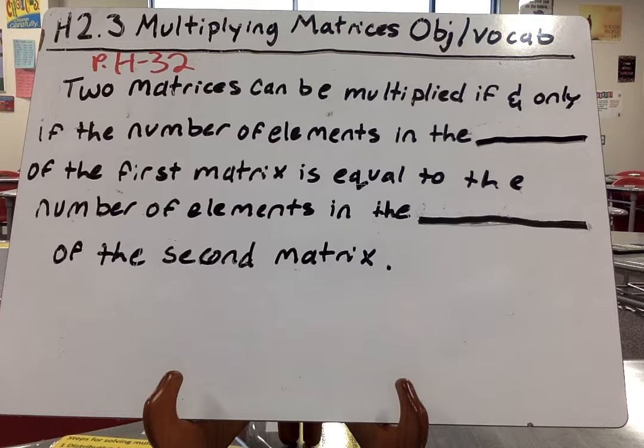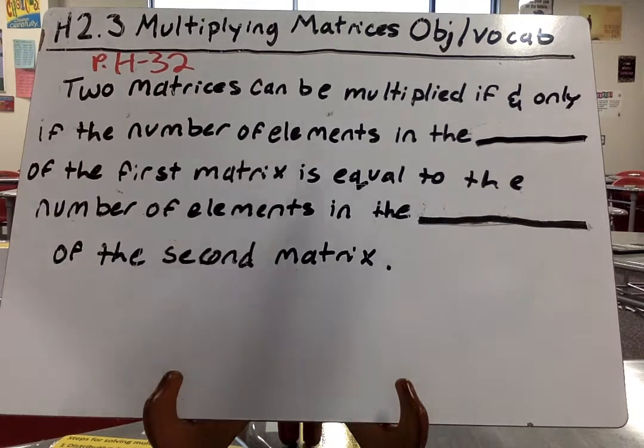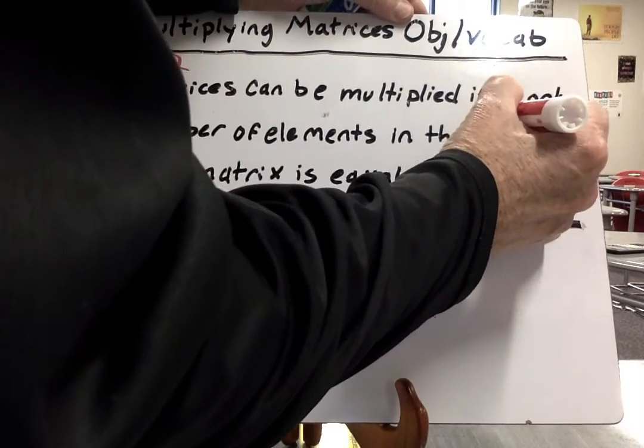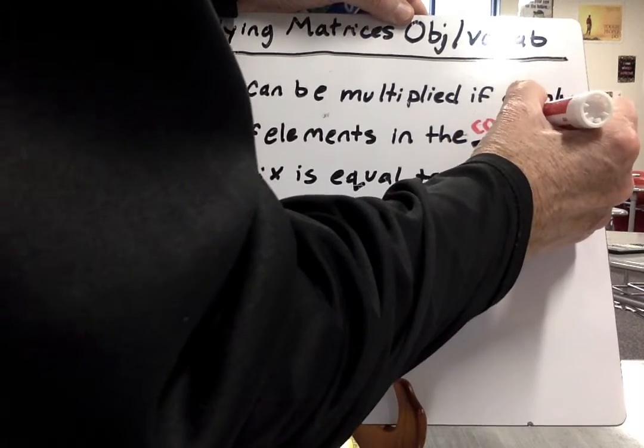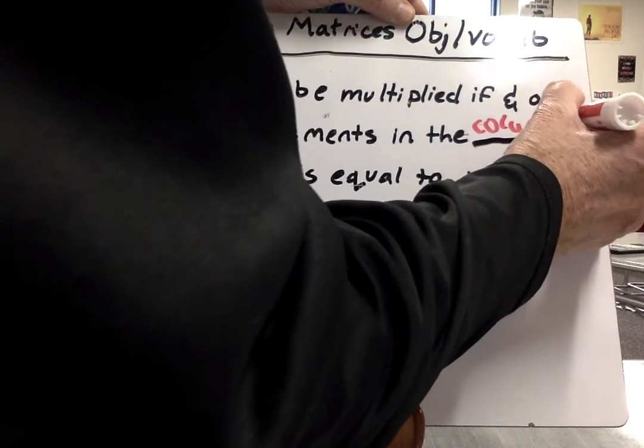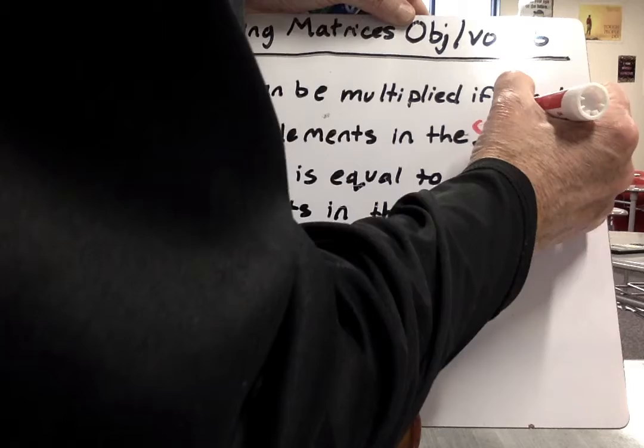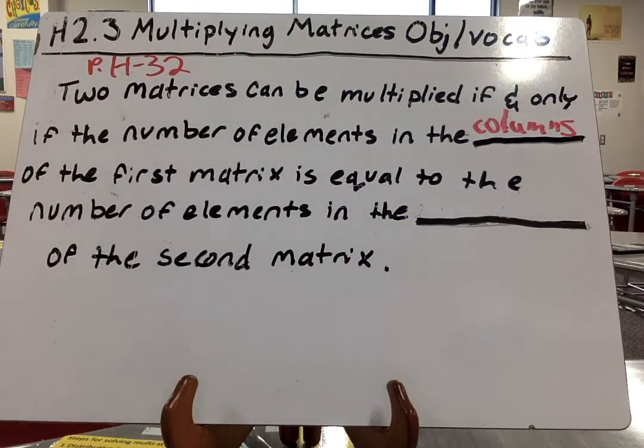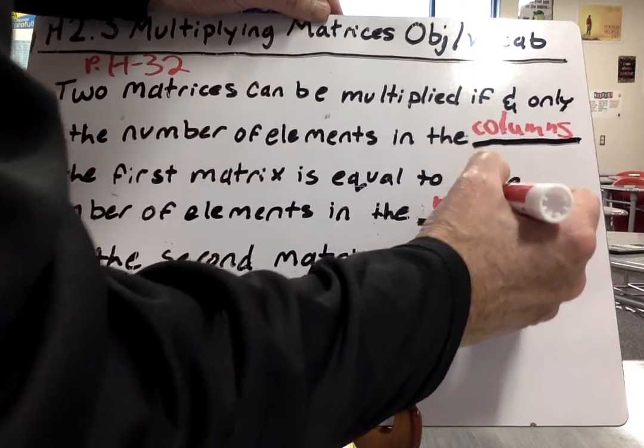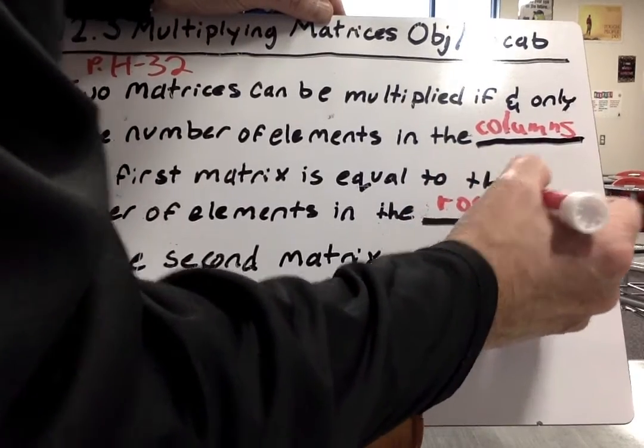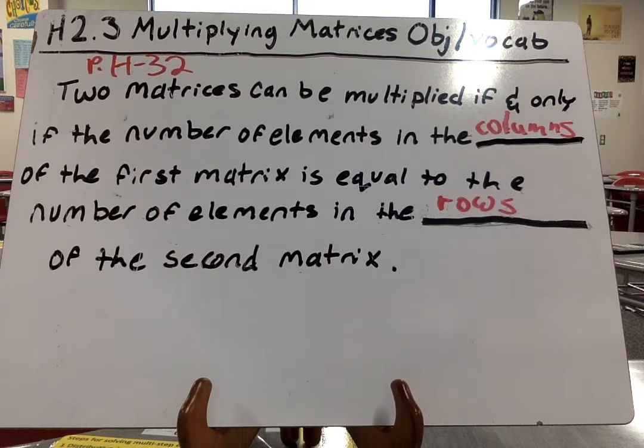Now this is page H32. It says two matrices can be multiplied if and only if the number of elements in the columns of the first matrix is equal to the number of elements in the rows of the second matrix.